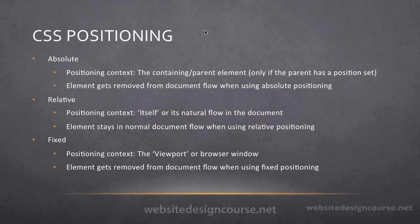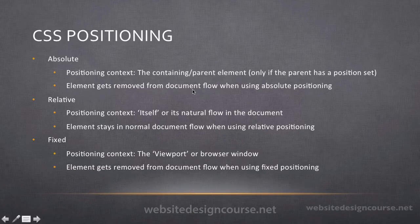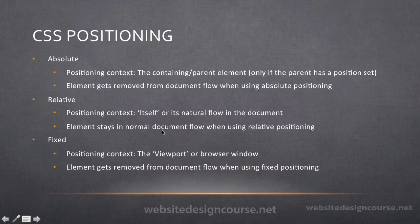Let's first look at a couple of slides to define the three different types of CSS positioning. The first type is absolute positioning. All three types have a different positioning context, and with absolute positioning, the context is according to the parent element only if the parent element has a position. Also note that with absolute positioning, the element gets removed from the normal document flow. The second type is relative positioning — its positioning context is itself or its natural flow in the document, and this element stays in normal document flow.